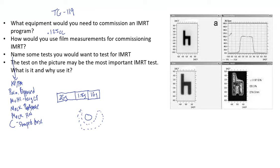Now, the picture to the right — I think the most important test — is called the Van Esch test, and a lot of people know it as the chair pattern or chair test. This tests the sliding window and the inverse planning system. It shows the quality control for inverse planning, the leaf motion calculator, and the dynamic MLCs and their performance. You plan, calculate, and measure this chair pattern.